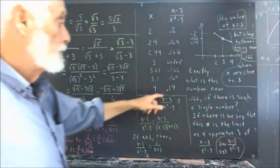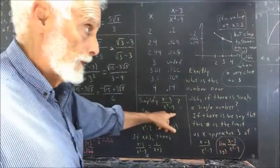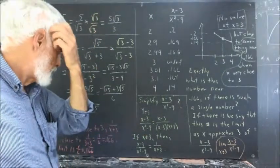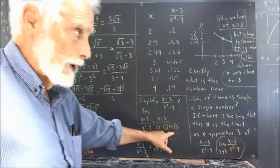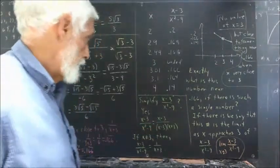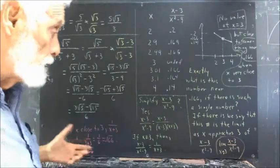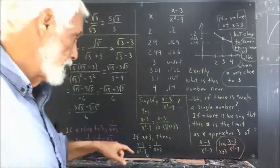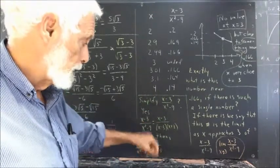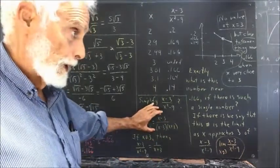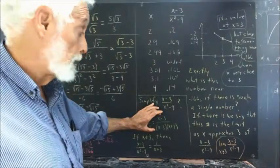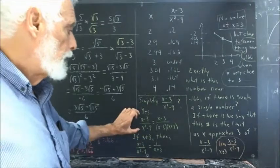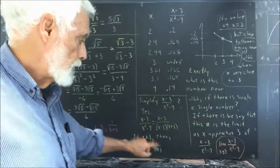Can we simplify x minus 3 over x squared minus 9? Well, yeah, we can. We can write this as x minus 3 over x minus 3 times x plus 3. And now, if x is not equal to 3, then this x minus 3 over x squared minus 9 turns out to be equal to just 1 over x plus 3. We divide out the x minus 3. Now we can't do that if x is 3, but if x isn't 3, we can do that. So if x isn't 3, then this expression is equal to 1 over x plus 3.